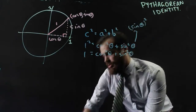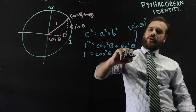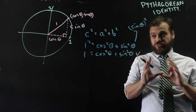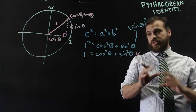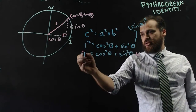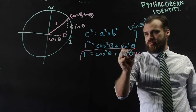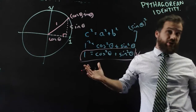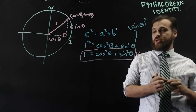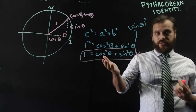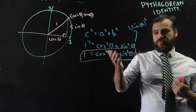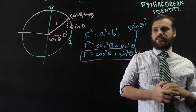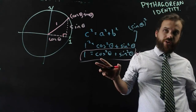This is the Pythagorean identity, and it's really, really useful. So everybody now has memorised: 1 equals cos squared theta plus sin squared theta. Pythagorean identity.